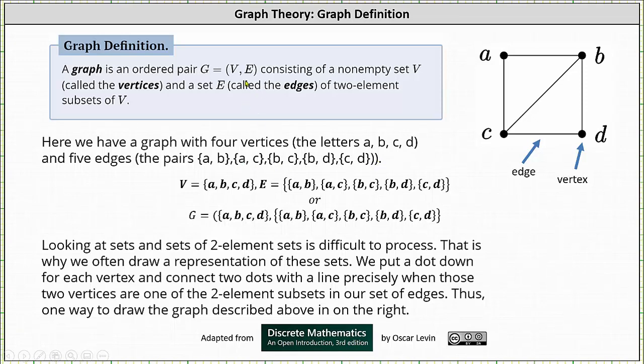So again, the set V is the set of elements which give the vertices, and the set E is the set of two-element subsets of V, which give the edges.